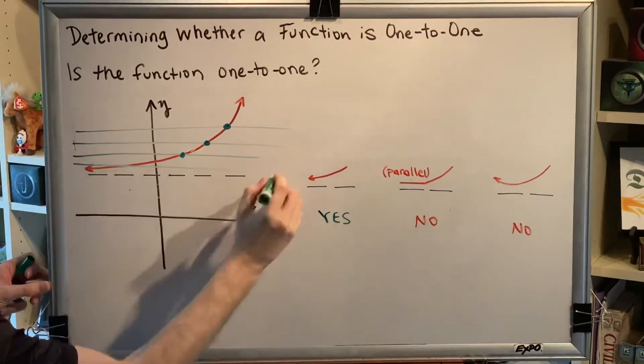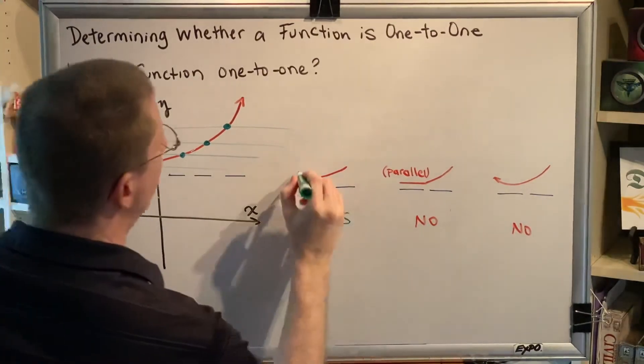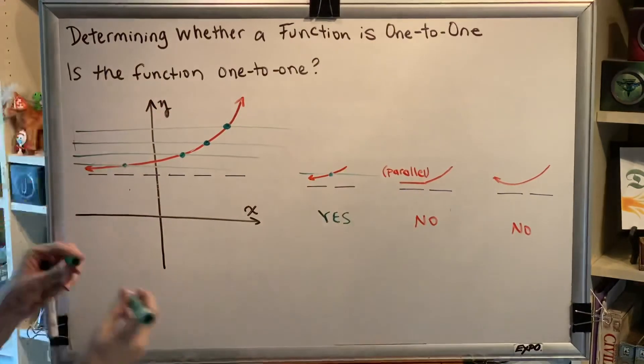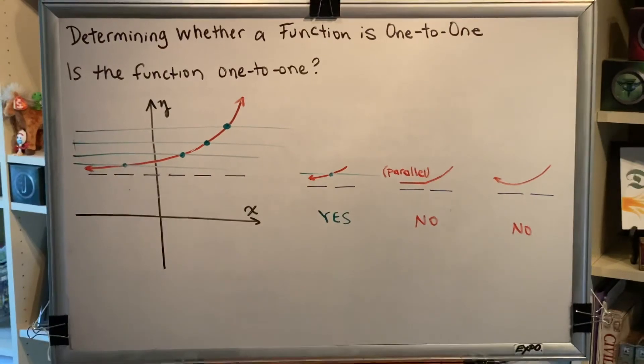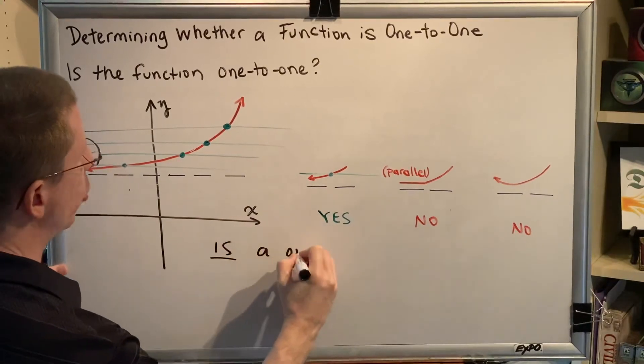No matter how many times I draw a horizontal line, each horizontal line is only going to intersect that red curve at exactly one point. And for that reason, this graph is a one-to-one function.